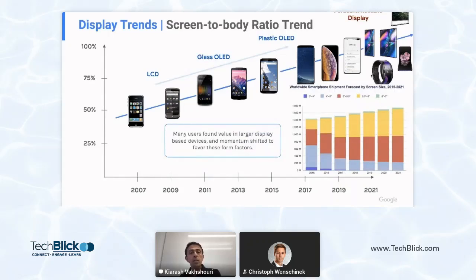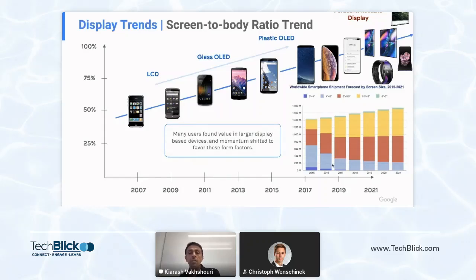If you look at the screen-to-body ratio trend, it's very interesting that mapping from LCD to glass OLED to plastic OLED, you see that display sizes are getting larger with higher screen-to-body ratios. Also, if you look at worldwide smartphone shipments as a function of time, you can see that a lot of users are preferring larger displays, and foldable, rollable, and flexible displays are becoming very popular.